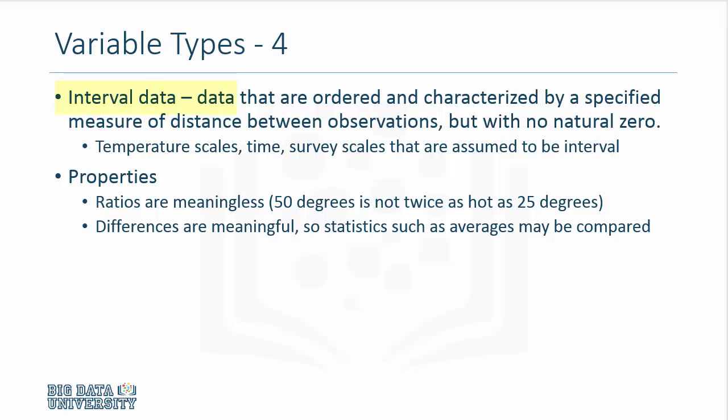Another type of variable is interval data or interval variables that are ordered and characterized by a specific measure of distance between observations but may not have a natural zero. Temperature is a good example. When you say it's zero degrees Celsius, it does not mean there is no temperature. It's freezing, but it is measuring something that exists.